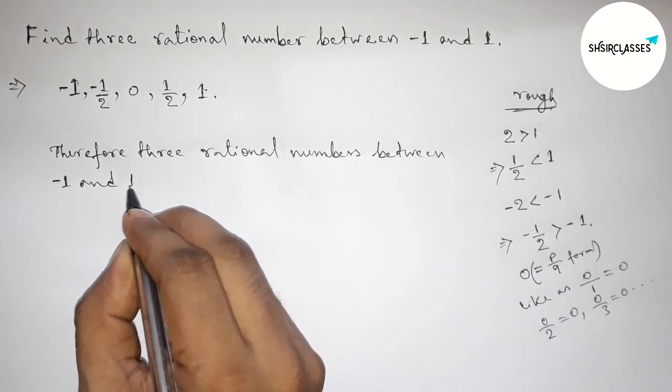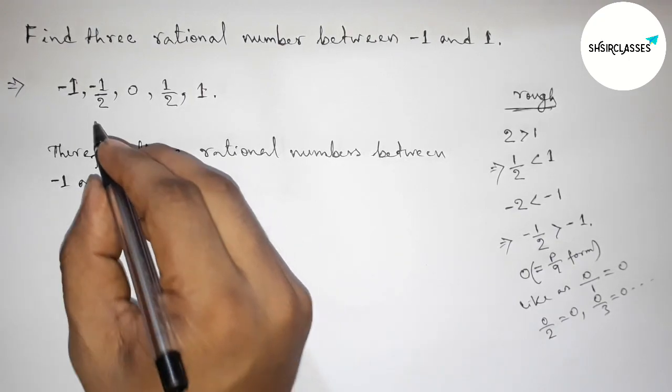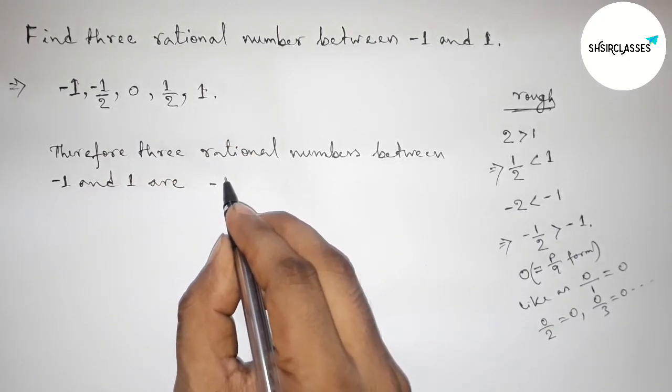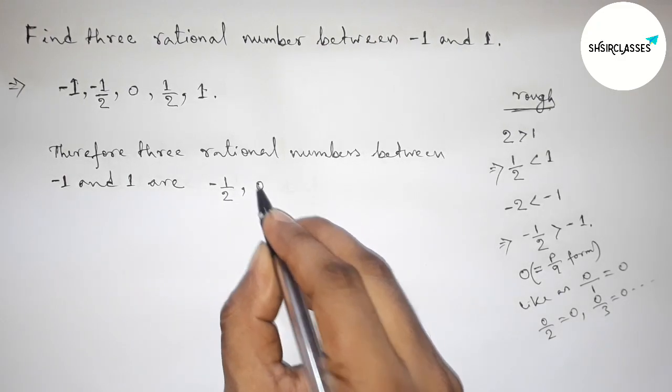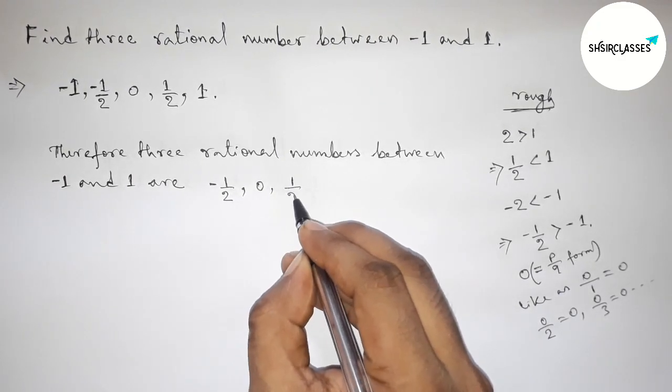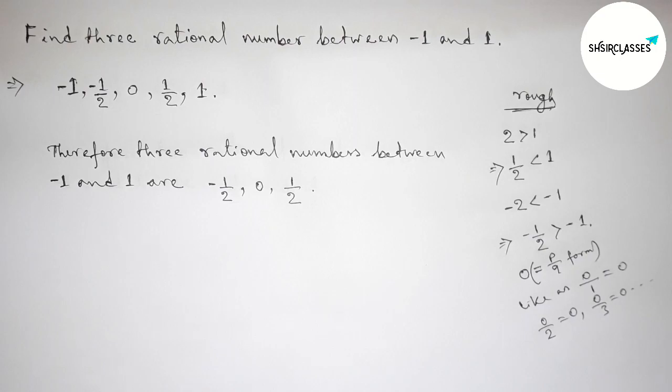Therefore, the three rational numbers between minus one and one are minus one by two, then zero, then one by two. By this way you can find three rational numbers. That's all, thanks for watching. Please see you.